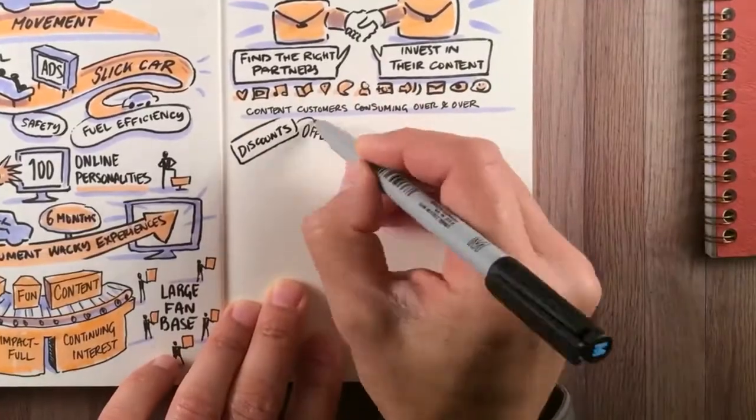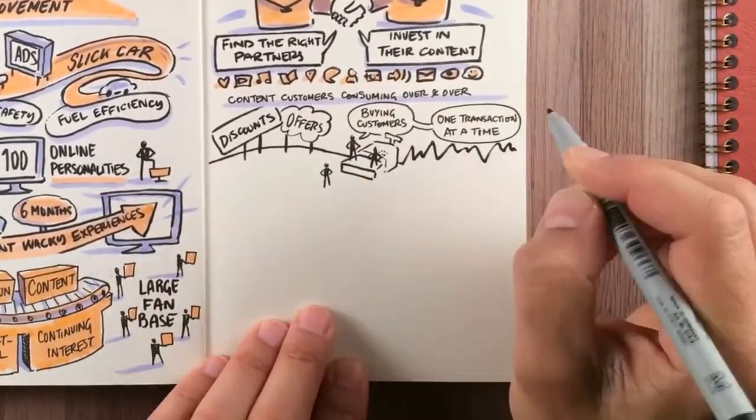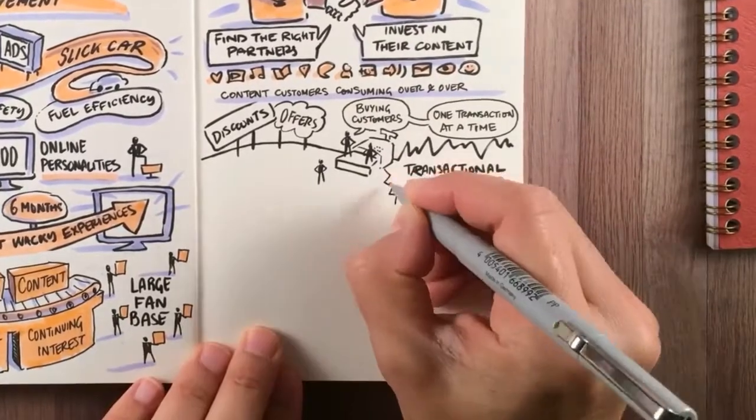If you rely on discounts and offers, you're effectively buying your customers one at a time and for one transaction at a time. This transactional relationship is very easy to break.